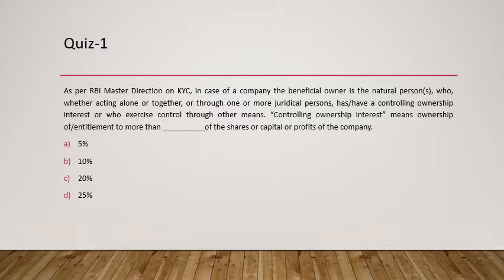As per RBI Master Direction on KYC, in case of a company, the beneficial owner is the natural person who, whether acting alone or together or through one or more judicial persons, has controlling ownership interest or exercises control through other means. This concept applies to companies, which are artificial persons run by natural persons, and involves the concept of controlling interest.